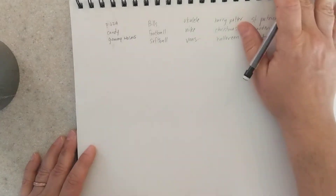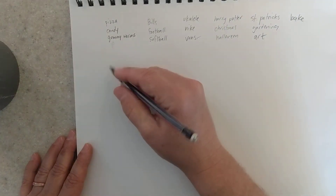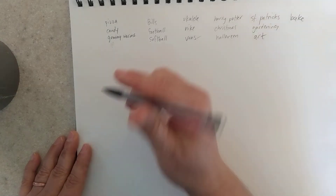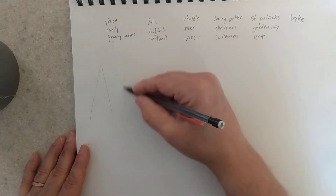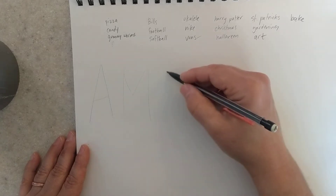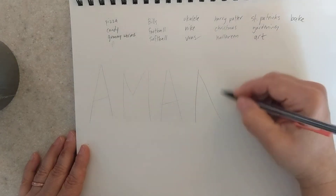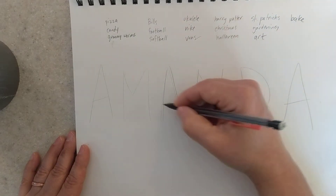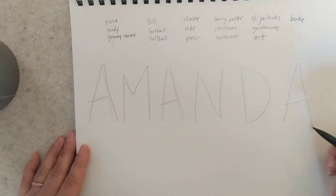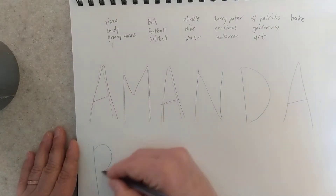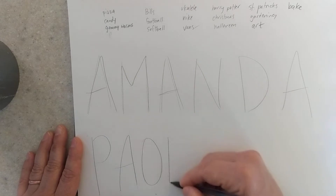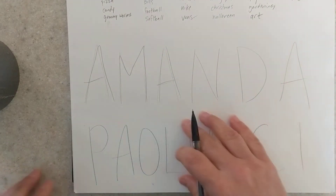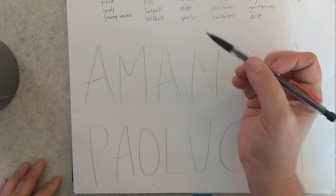Once you have your list, you're going to sketch out your name. I'm going to do my first and last name, and I'm just going to lightly sketch it out. You can do uppercase, lowercase, or a combination of the two. Now I'm going to do my last name.